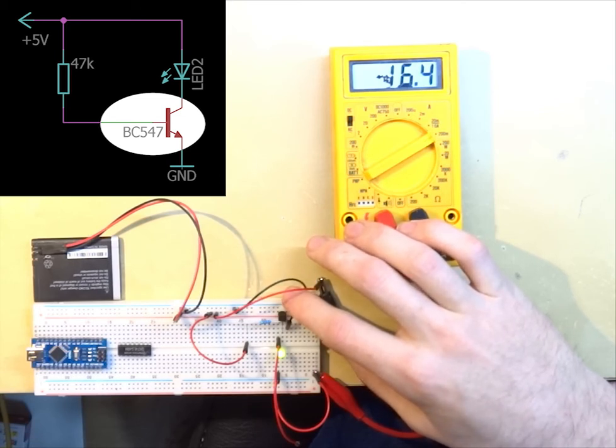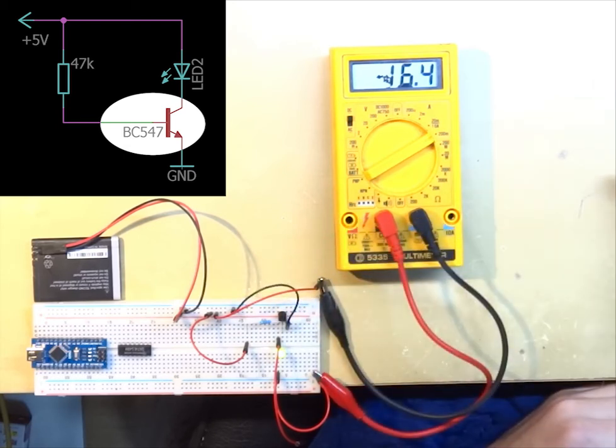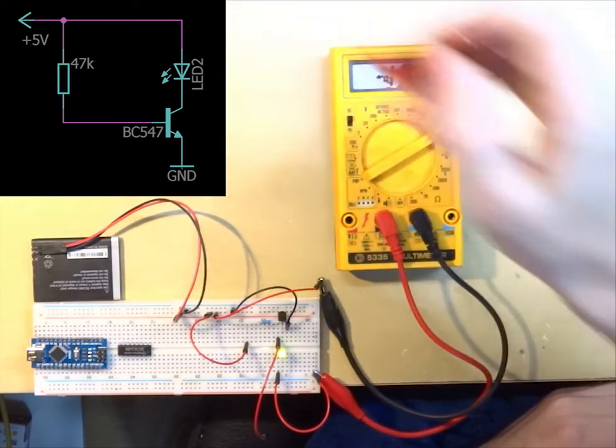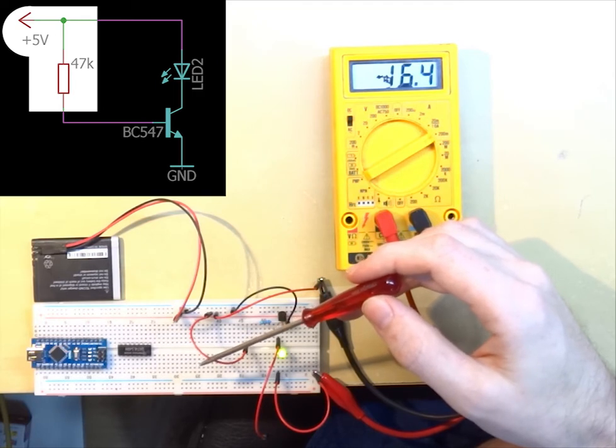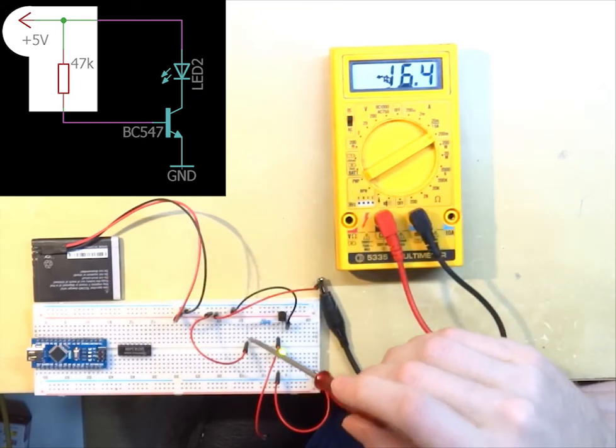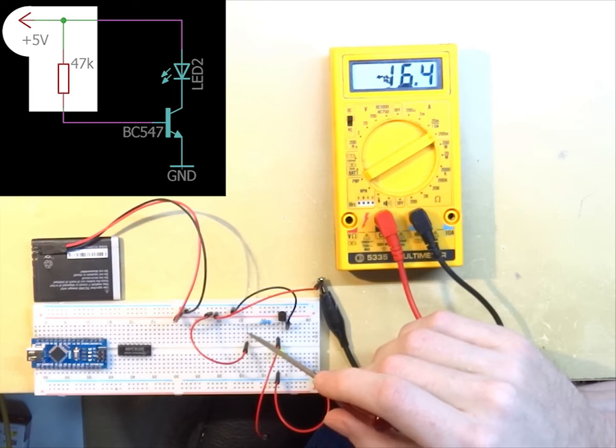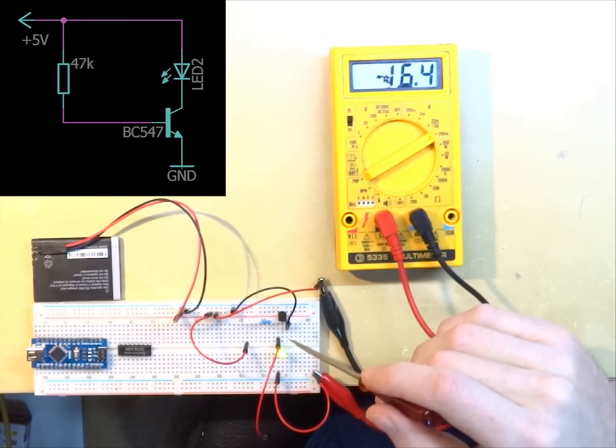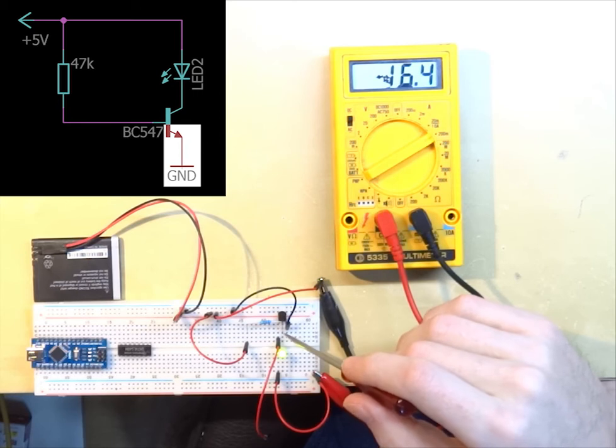Then we have a resistor going from the power supply, which is a battery, through a 47K resistor to the base of the transistor. From the emitter of the transistor we are connected to ground.